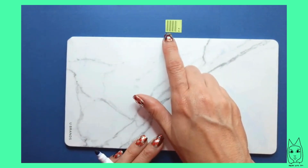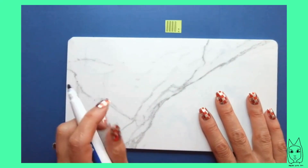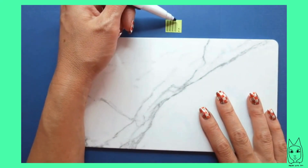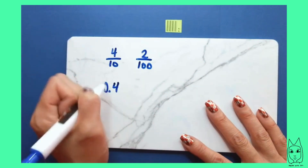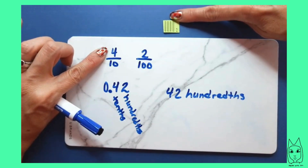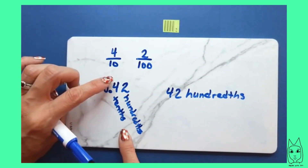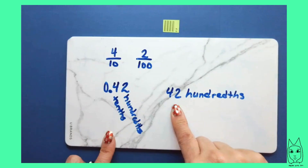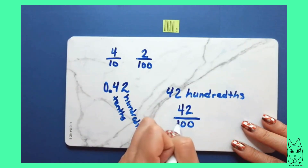For our next example, we don't have any wholes — we only have part of a whole. So we're not going to write a whole number. We have four tenths and two hundredths. Each of these bars is representing a tenth, so I have four tenths and two hundredths. I can write those using place value because I know where the tenths place is and I know where the hundredths place is. So this would be 42 hundredths, and the fraction would be 42 over a hundred.